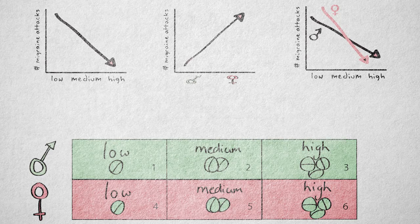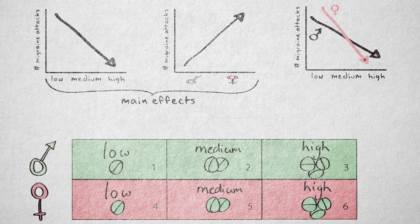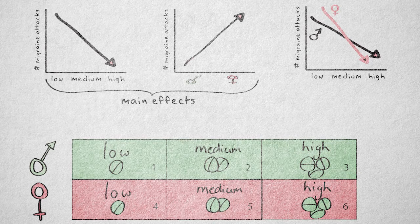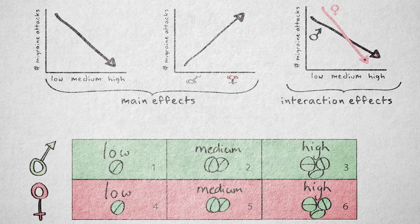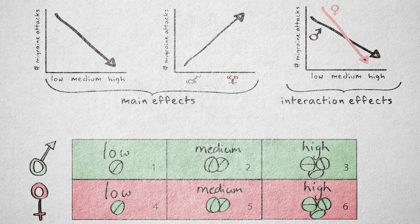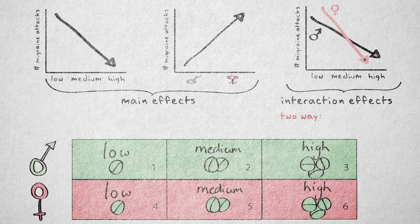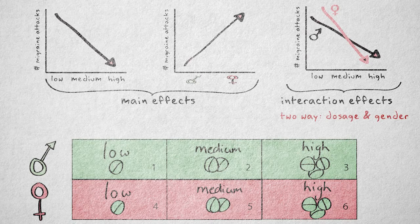The effects of the factor separately are called main effects. The combined effect is called the interaction effect. In this case, we're dealing with a two-way interaction because the effect combines two factors.